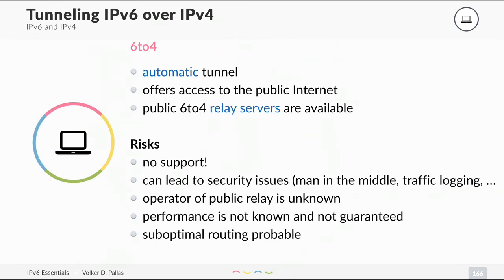The first automatic tunnel version is 6to4, which offers access to the public internet. It's an automatic tunnel that cannot be manually configured, and there are public 6to4 relay servers available. There are risks associated with this: there is no support, it can lead to security issues — man-in-the-middle, traffic logging — because it uses public relay servers and you don't know which one is used. It could be a hacker, it could be a provider; the operator is unknown, and the performance is not guaranteed.